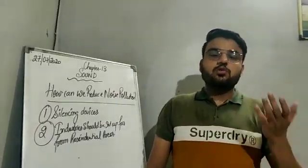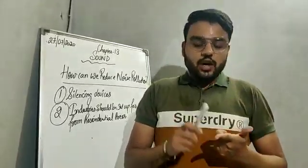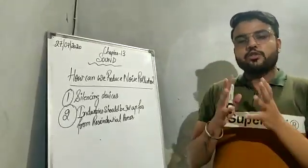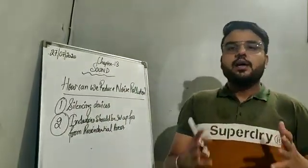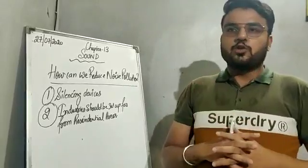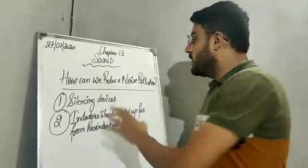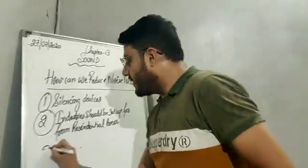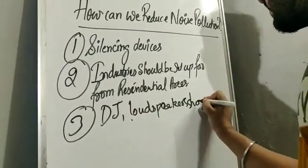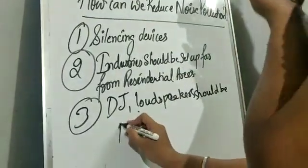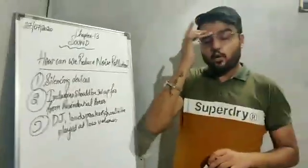In residential areas, to limit noise pollution, first of all there should be no DJ or loudspeakers played at high volume. We should listen to the music produced by them at low volume so that other people — including sick persons — are not disturbed by the activities of DJs and loudspeakers. Unwanted noise should not be there to control noise pollution.